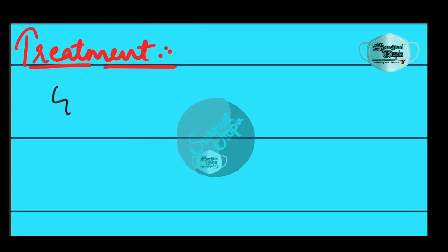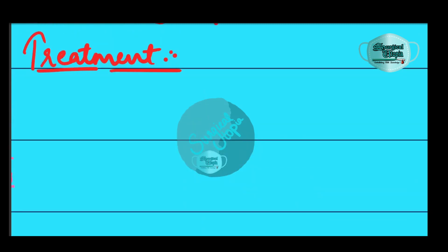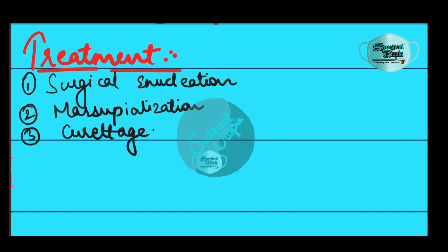The treatment options for OKC may vary according to its size, extent, site, and adjacent structures. The first option is surgical enucleation — removal of the entire epithelial lining of the cyst. The second option is marsupialization followed by enucleation in cases where the cyst is large. The third option is curettage, which involves simple excision and scraping out of the cavity.